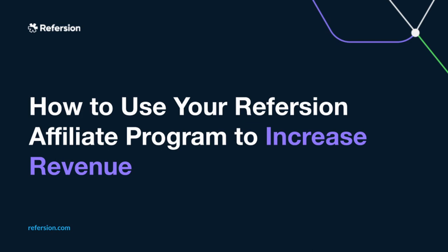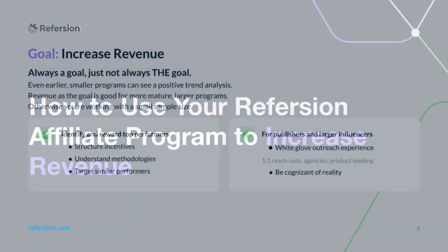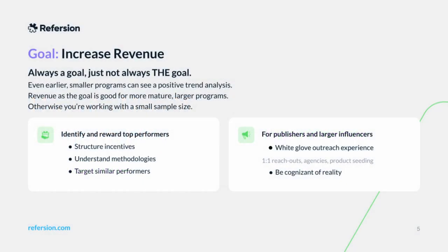Hi there. In this video series we've been covering four distinct goals that you can set for your affiliate program. Now we'll turn next to the goal of using Refersion to help increase your revenue. It kind of goes without saying, but increasing revenue is always a goal for every single affiliate program — there is not a single merchant using Refersion whose goal in one way, shape, or form isn't to make more money.